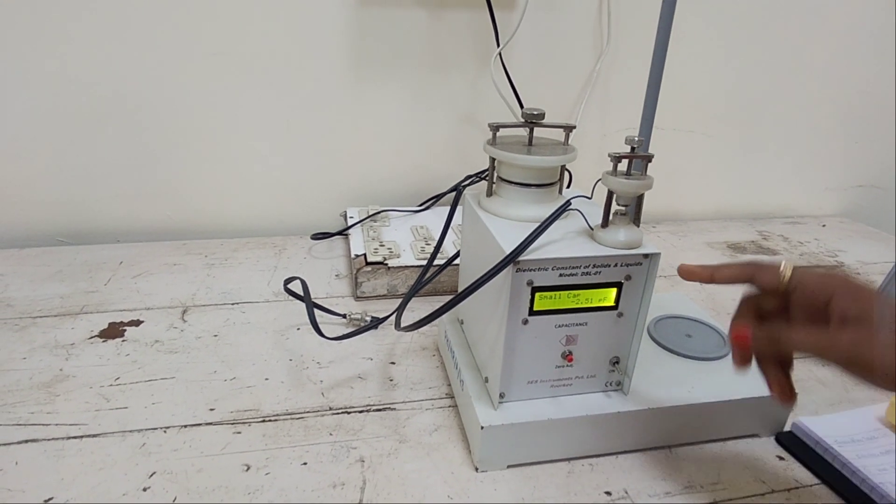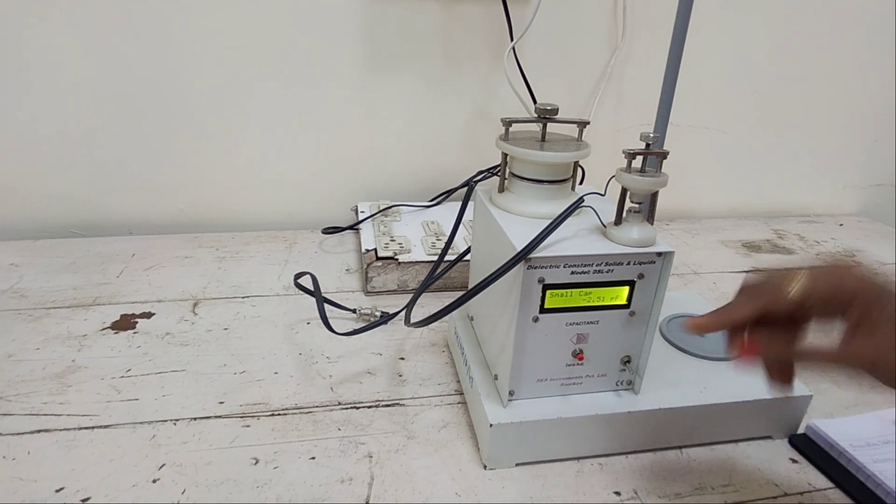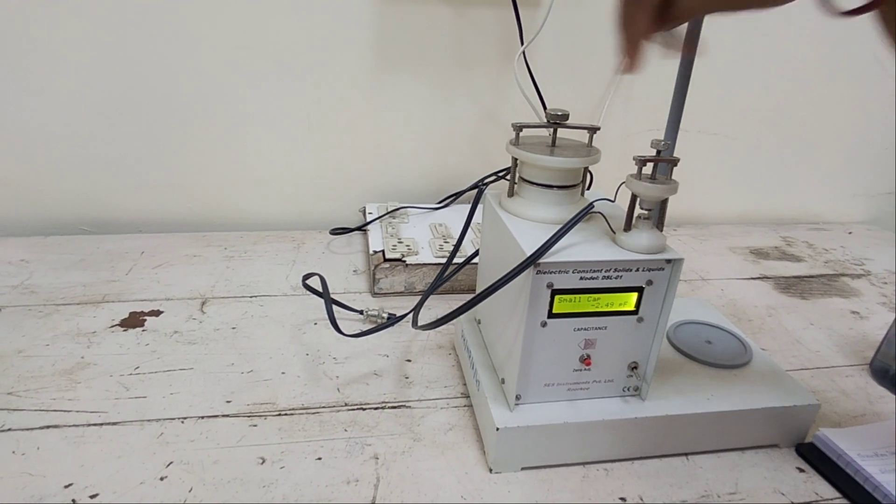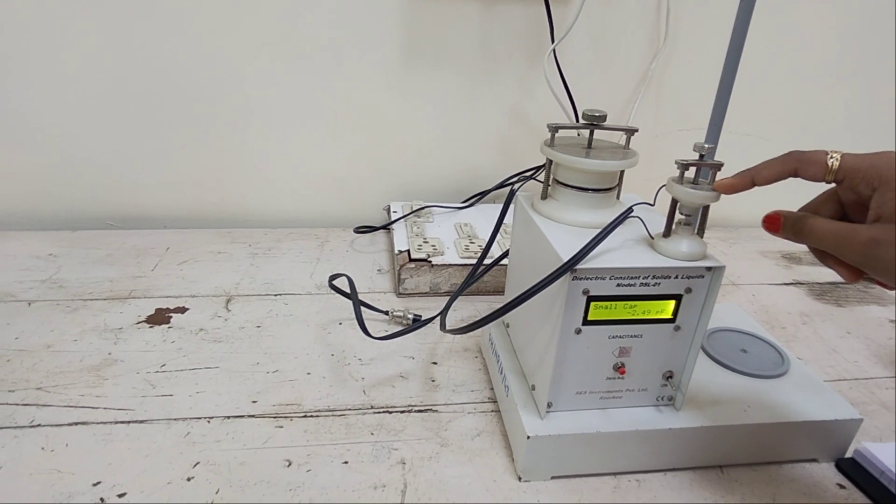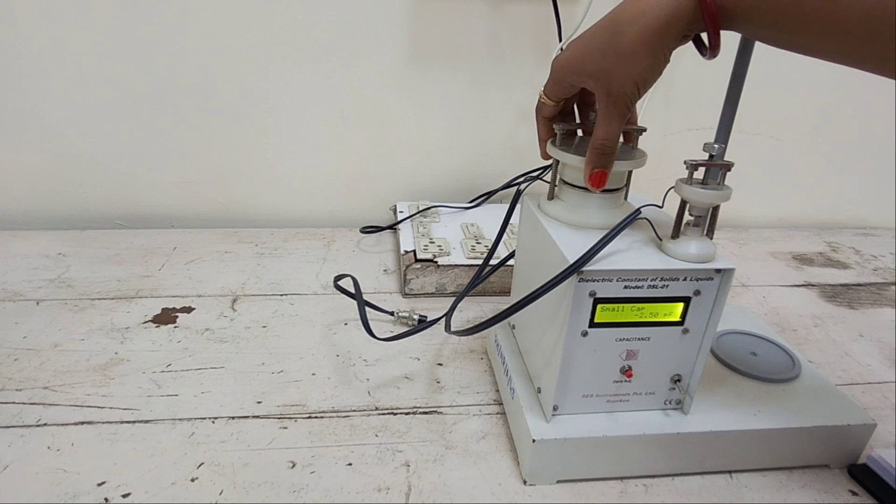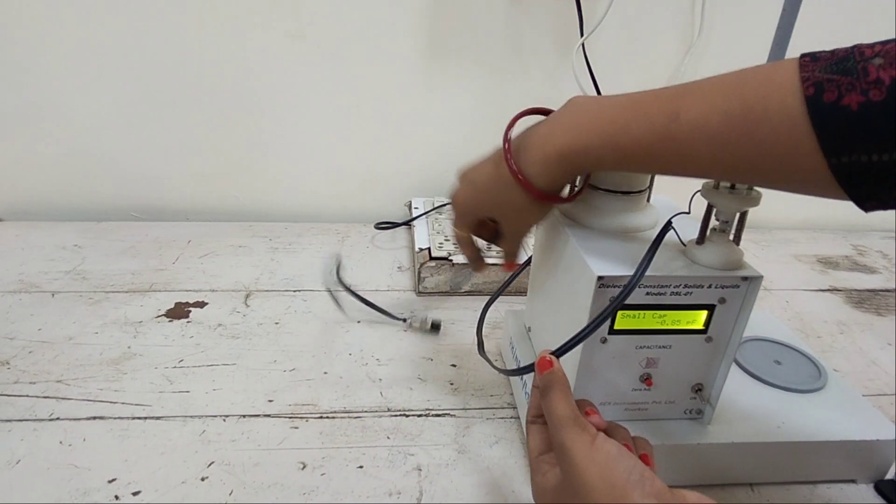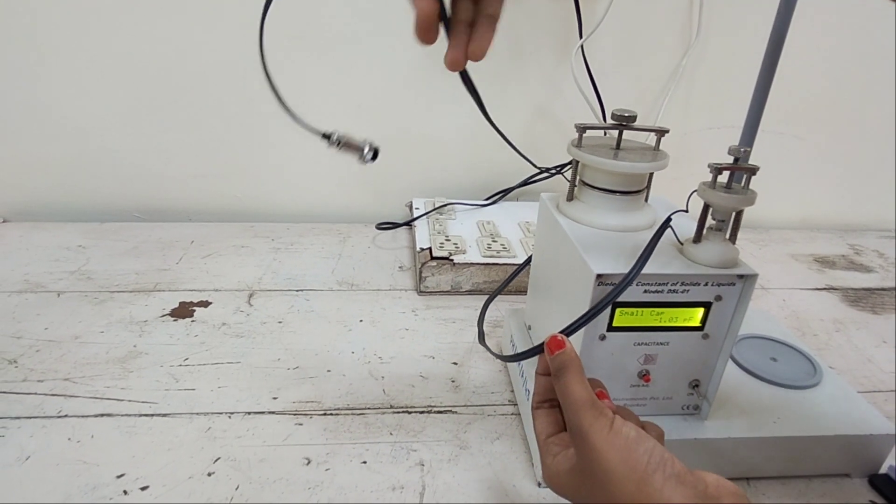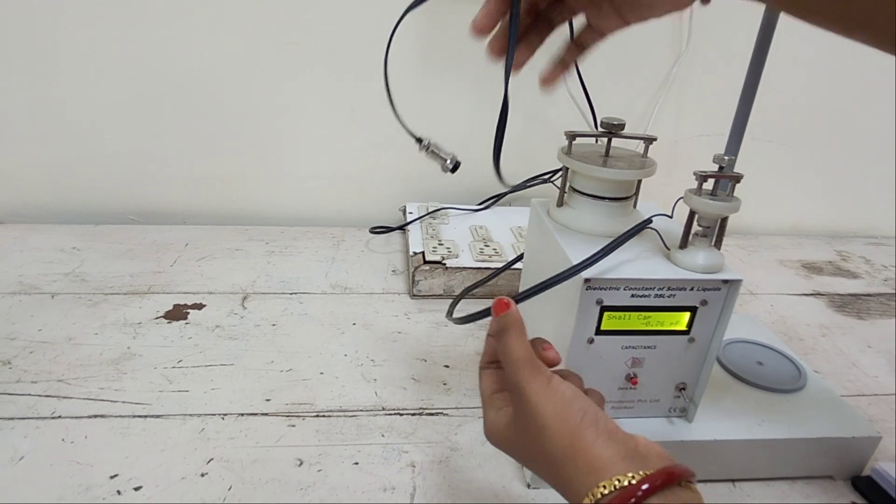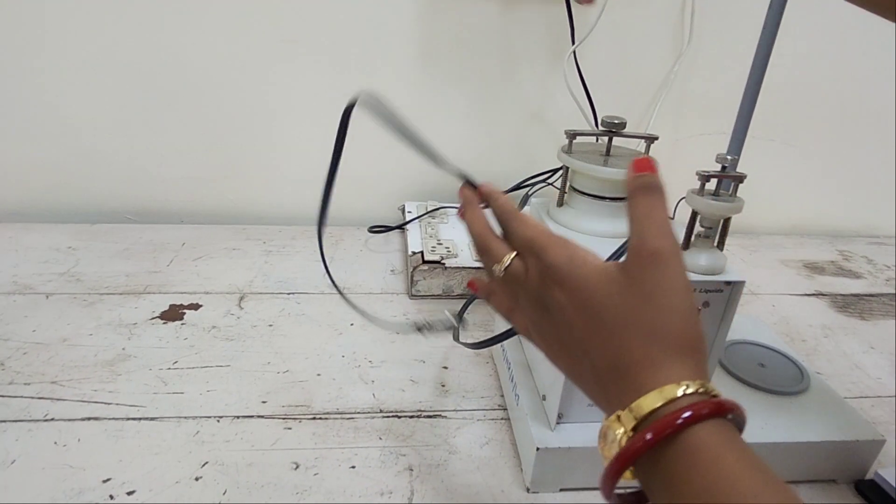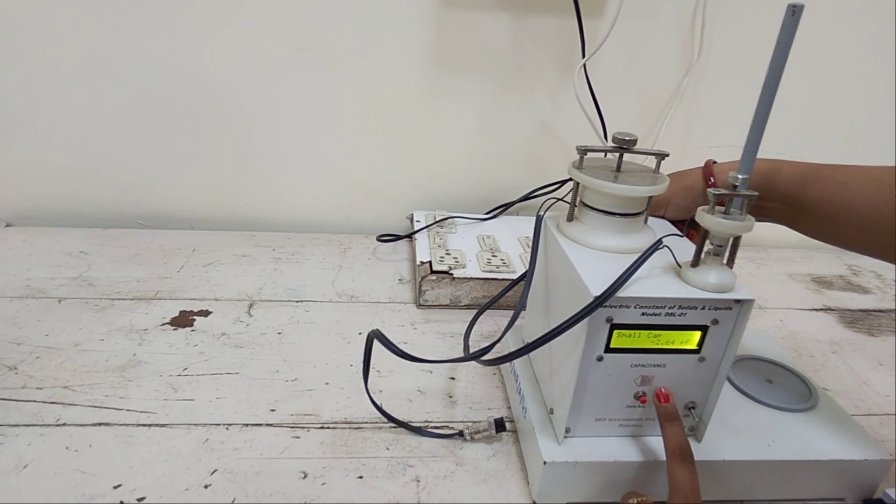This is the experimental setup in which this is digital capacitance measurement and here there are two capacitors, two parallel plate capacitors. This is small whose diameter is 10 mm and this is big whose diameter is 50 mm. You can see there are two wires, one for large capacitor and second for small capacitor. This is connected outside the terminal of this dielectric constant measurement from which we can measure capacitance.